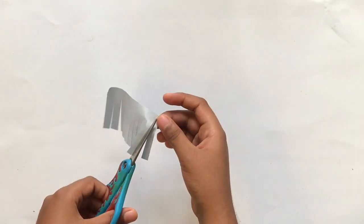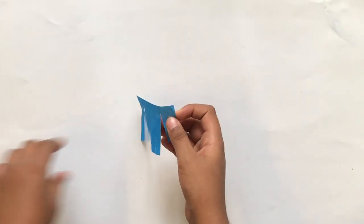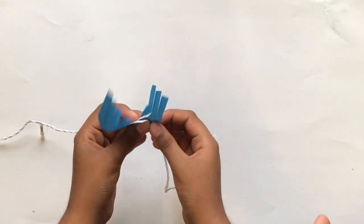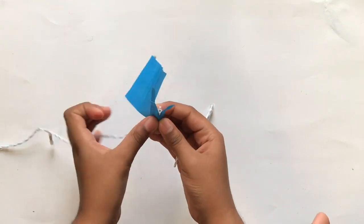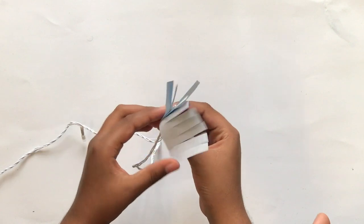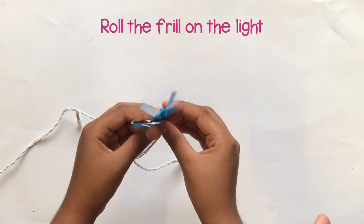So, I have cut it and I am gonna put it on the string light. Keep the paper which is not cut below and then start folding tightly around the light.